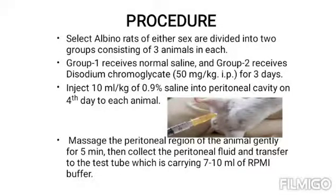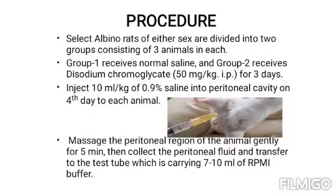Procedure. Select albino rats of either sex and divide into 2 groups consisting of 3 animals in each. Group 1 receives normal saline. Group 2 receives disodium chromoglycate 50 mg per kg by intraperitoneal route for 3 days. On the 4th day, inject 10 ml per kg of 0.9% saline into the peritoneal cavity of each animal.